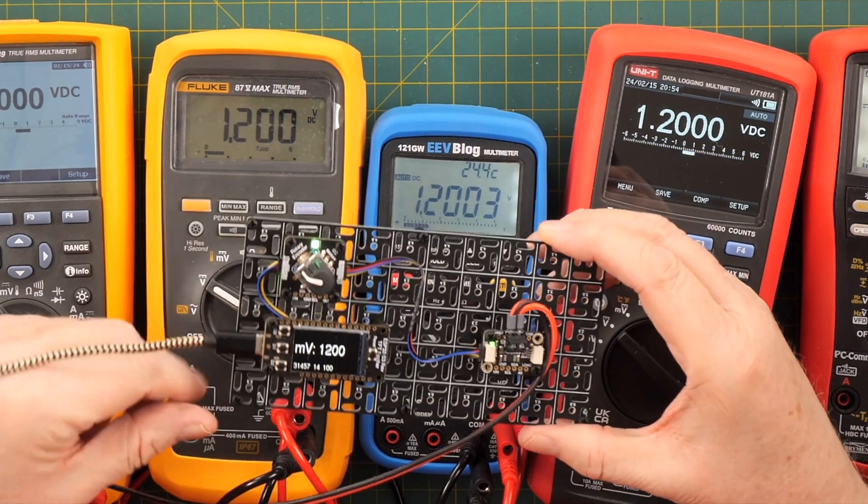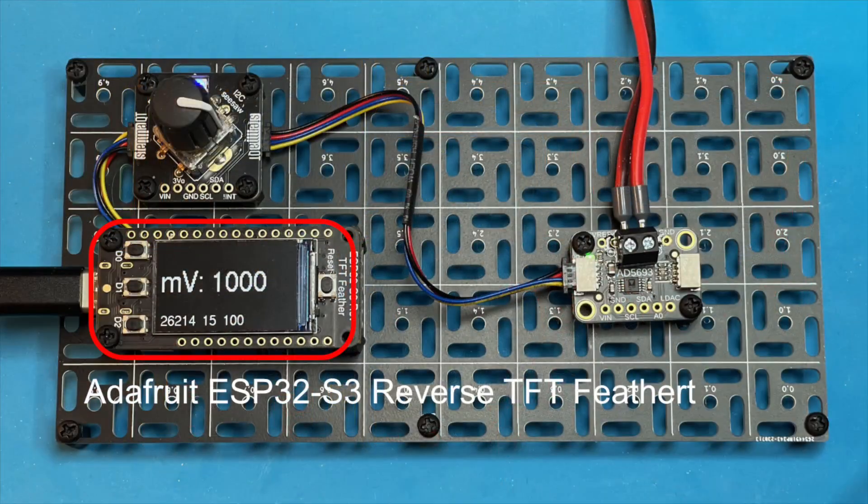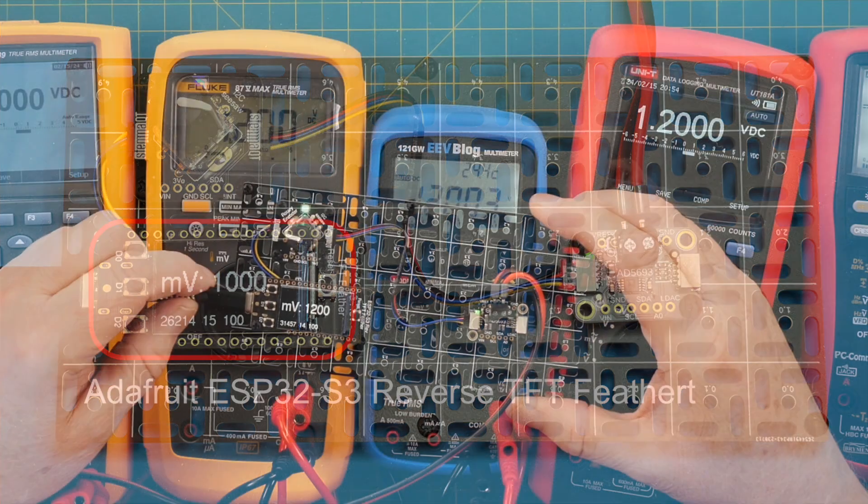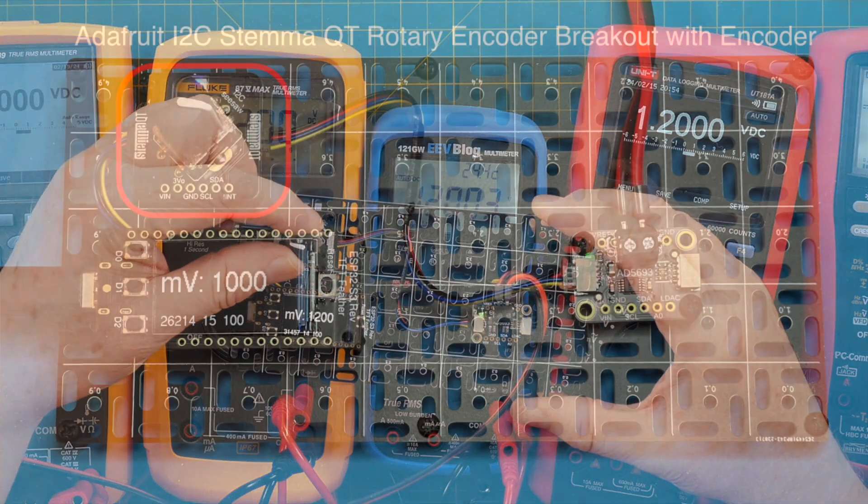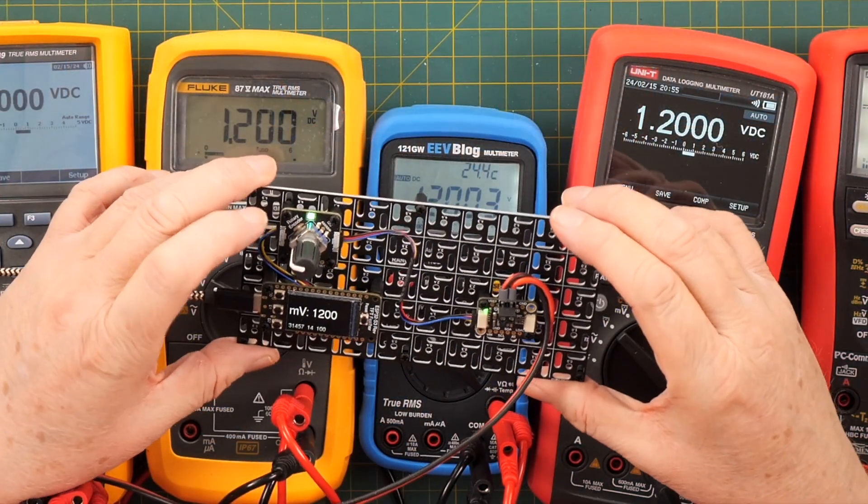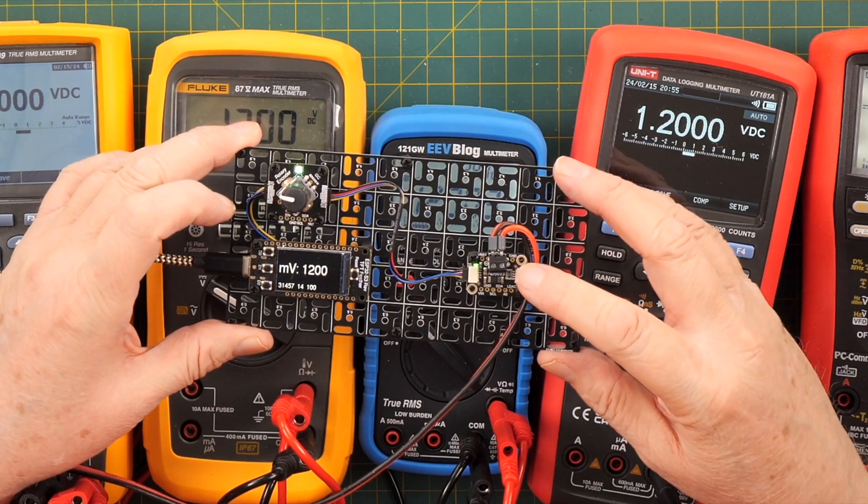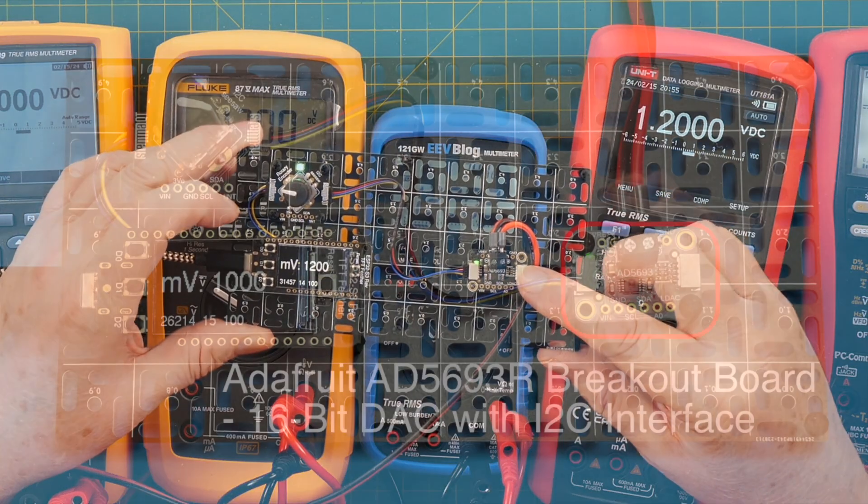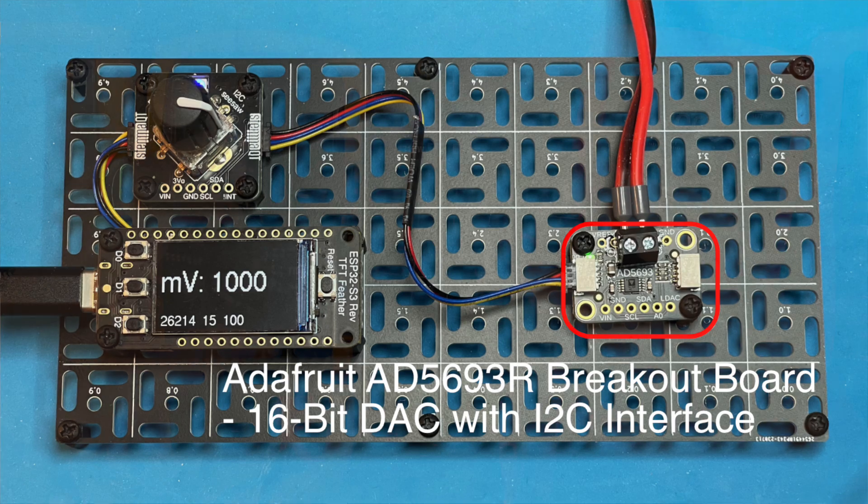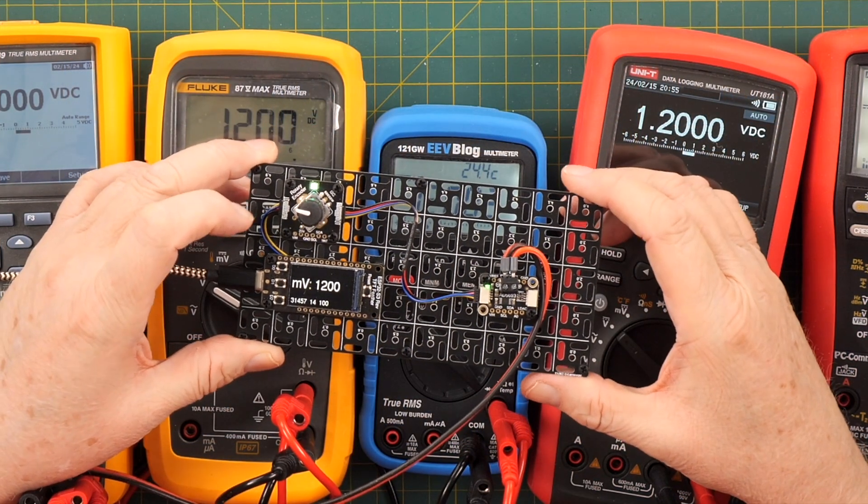This is an ESP32-S3 with a display built on it. This is a rotary encoder which is handled by this little device and then sent over I2C. This is a digital to analog converter. Again, instructions go over I2C. There's a little output and that's what I'm using.